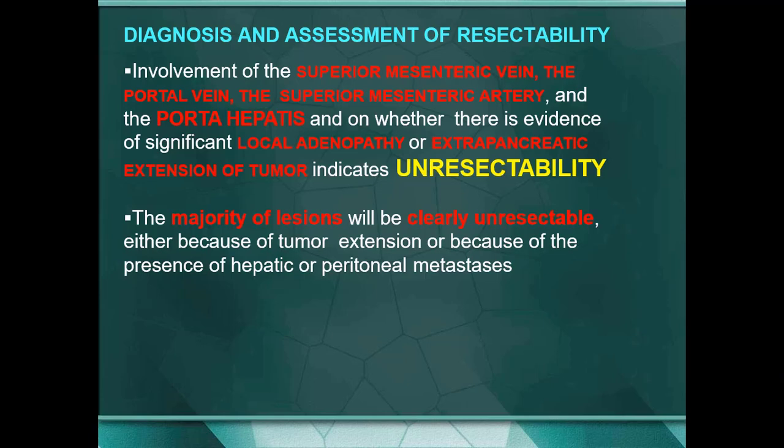After diagnosis, assess resectability of the tumor by looking at the superior mesenteric vein, portal vein, superior mesenteric artery, and porta hepatis — whether the tumor involves these important structures — and any lymph nodes in that area, which indicates unresectability. The majority of lesions will be clearly unresectable either because of tumor extension or because of the presence of hepatic or peritoneal metastasis.